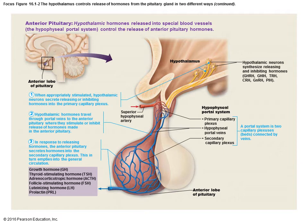There are eight hormones associated with the pituitary gland. The first two — oxytocin and ADH — are made in the hypothalamus and stored in the posterior pituitary. The remaining six are produced in the anterior pituitary in response to stimuli from the hypothalamus: growth hormone, thyroid stimulating hormone, adrenocorticotropic hormone, follicle stimulating hormone, luteinizing hormone, and prolactin. Be familiar with both the abbreviations and the full names.